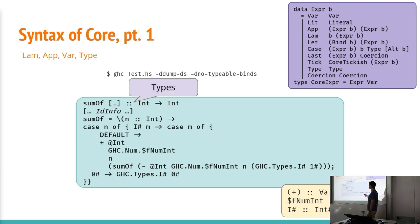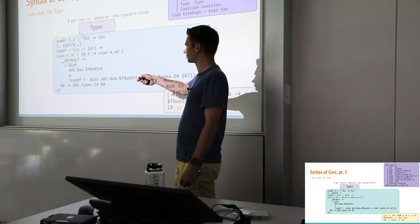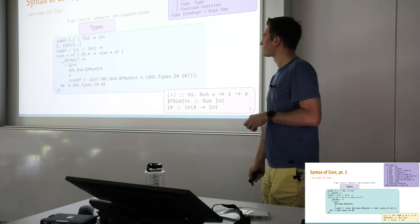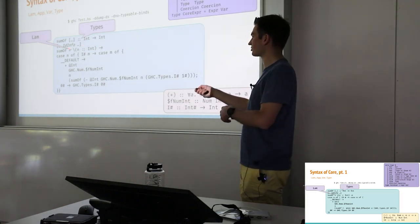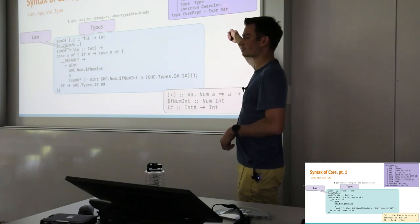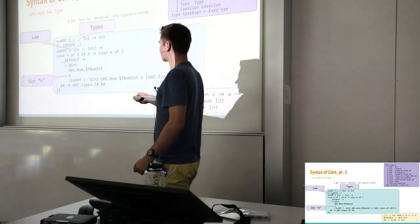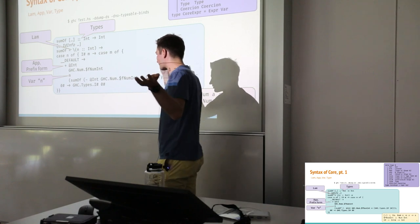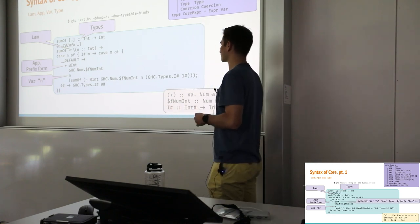If I leave off -dsuppress-all, I get a bit more blown-up information. You'll note that the first interesting thing is that we have explicit type annotations. We've also got this id info here, which is meta information that the compiler can attach and exploit in its Core passes. What we've got here is a lambda expression. The interesting part is that it's also explicitly typed — every binder, like the lambda binder here, which b is instantiated to Var, carries an explicit type. This type is stored inside the Var data structure. A variable occurrence of n occurs inside an application to plus. These applications are all in prefix form, and the number of arguments to plus increases from two to four compared to the Haskell source code.